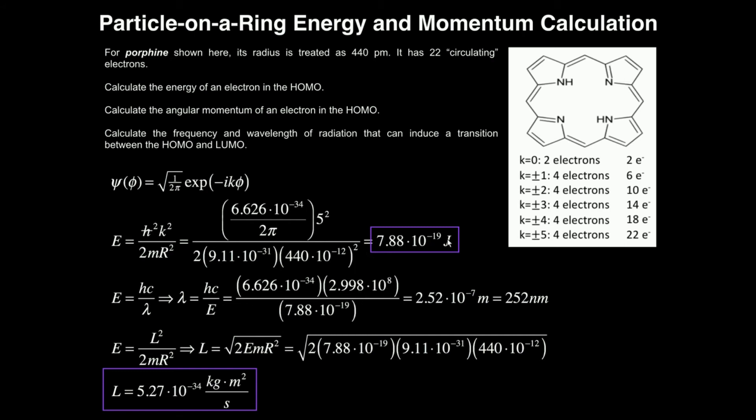The energy, we just calculated that. So throw that down here, divided by 7.88 times 10 to the minus 19th. And when you calculate all this, you'll find that the wavelength of light needed to promote an electron from the HOMO to the LUMO is 2.52 times 10 to the minus 7th meters, which happens to be 252 nanometers.